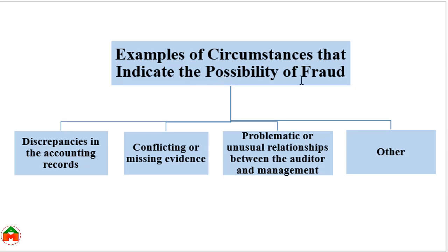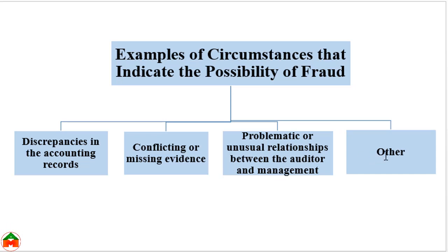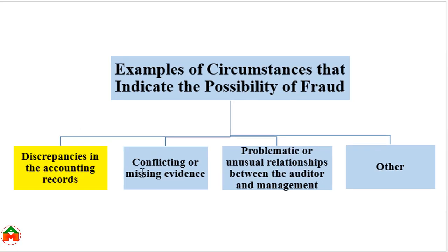According to the International Auditing and Assurance Standards Board, the examples of circumstances that indicate the possibility of fraud can be categorized into four parts: discrepancies in accounting records, conflicting or missing evidence, problematic or unusual relationships between the auditor and management, and other factors. In the first stage we will discuss discrepancies in accounting records.